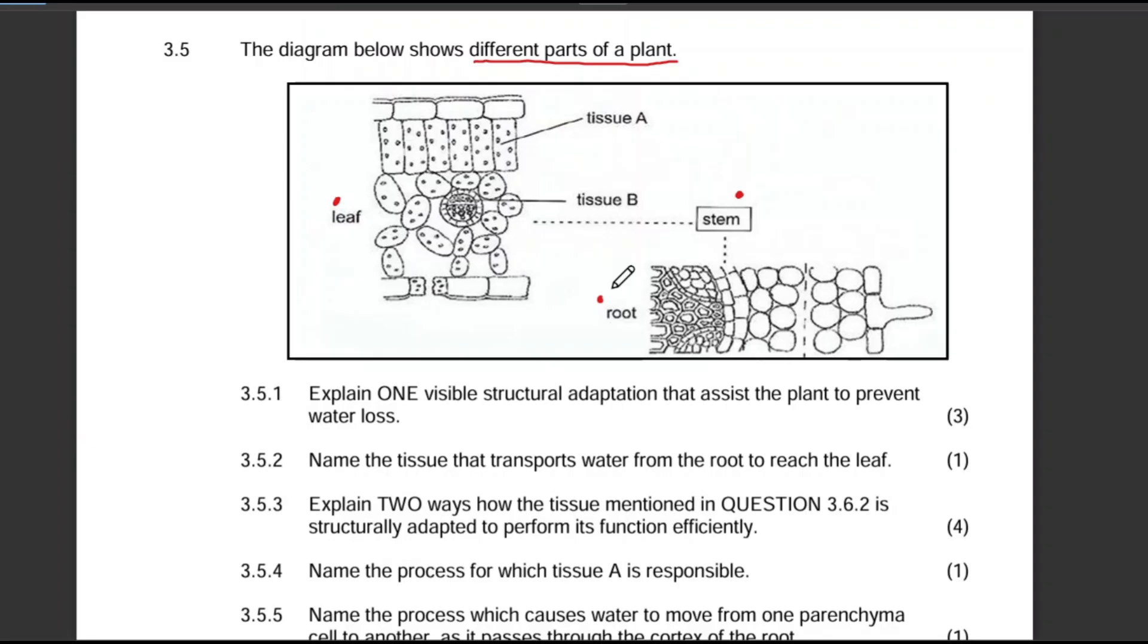Question 3.5.1: Explain one visible structural adaptation that assists the plant to prevent water loss. Let's break down this question. We need to explain only one visible structural adaptation, so this adaptation should be something we can clearly see from the diagram. This structural adaptation is the one that assists the plant to prevent water loss.